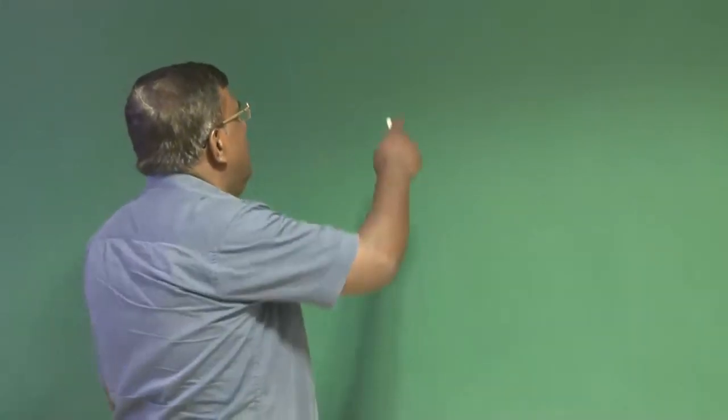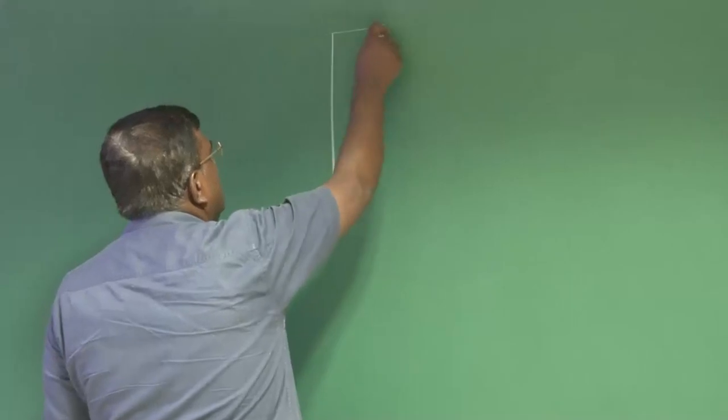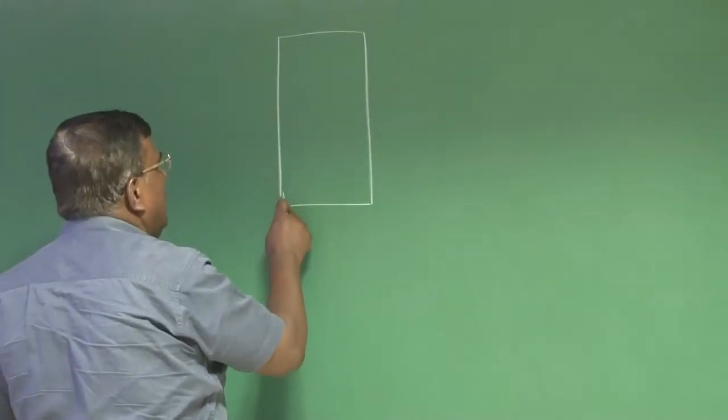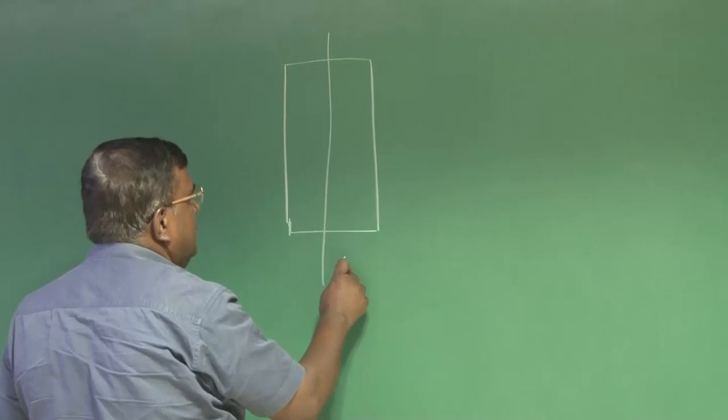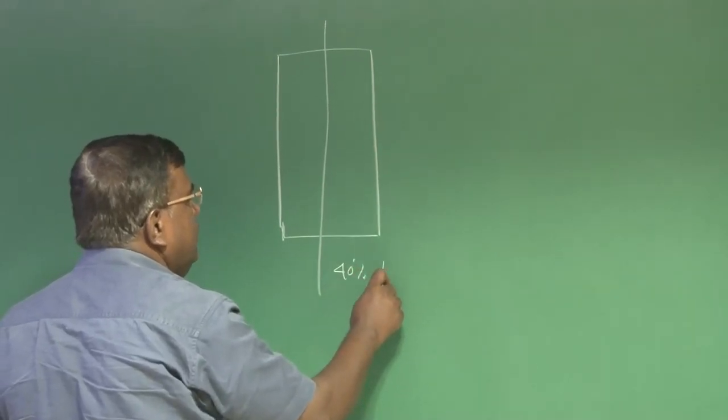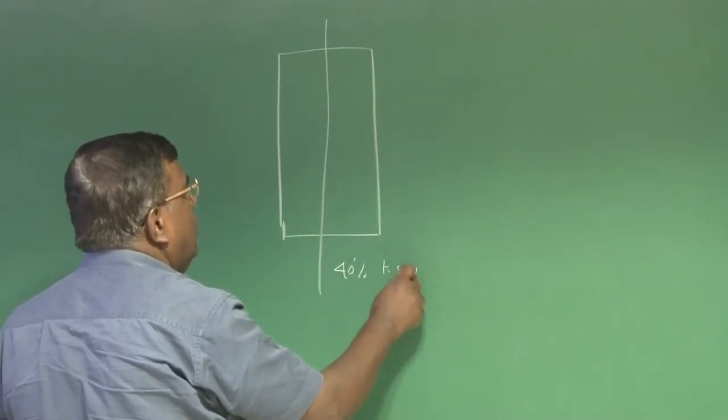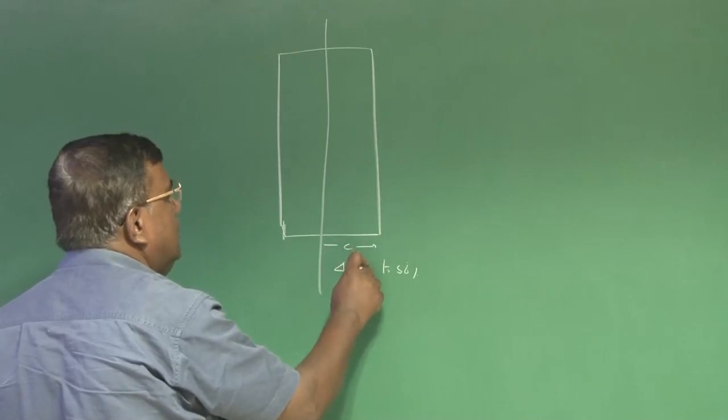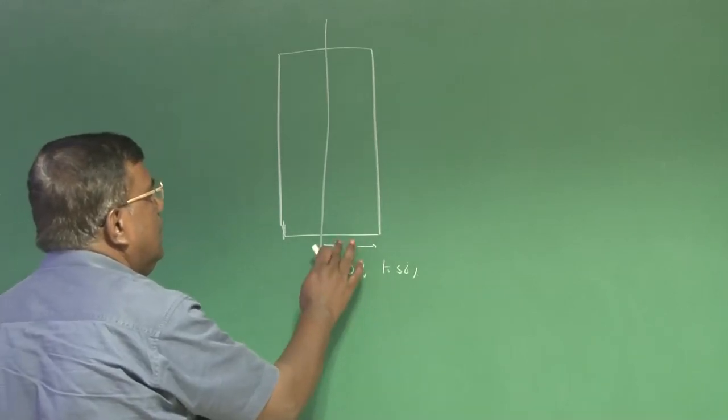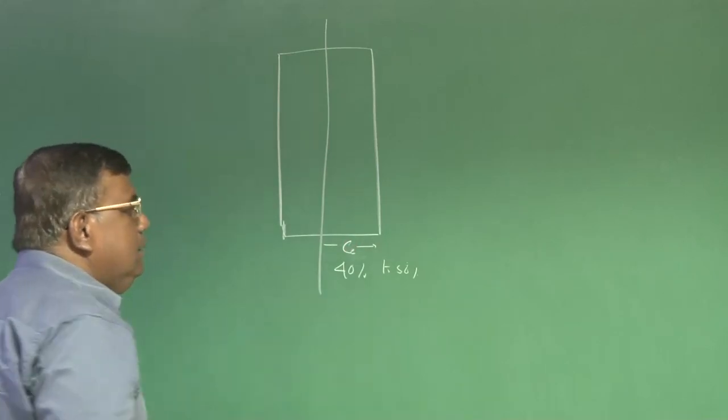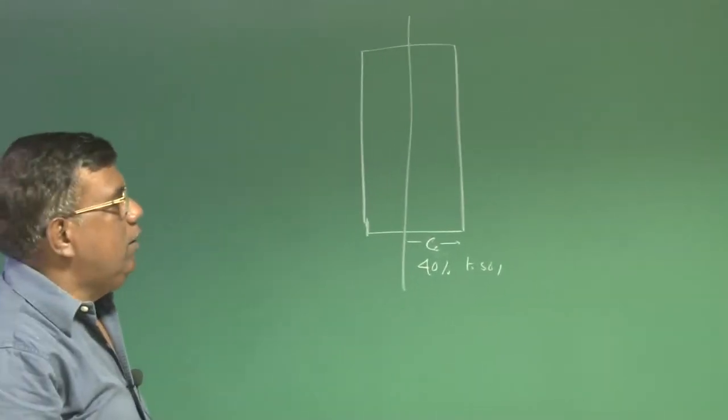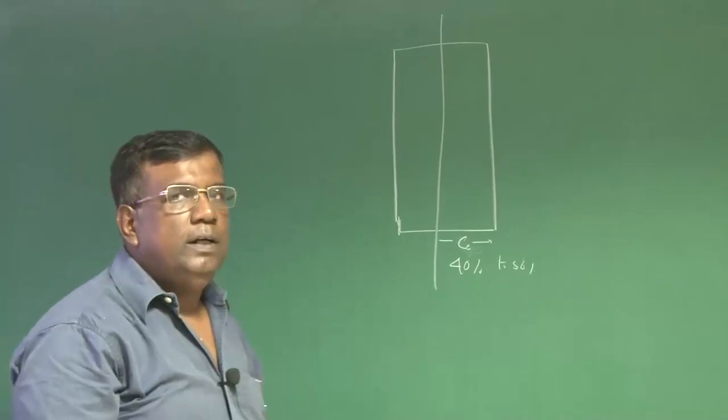Good morning friends, we are continuing our lecture on elevator design. At a conceptual stage, we have realized that if I have a horizontal tail like this, the elevator can roughly be 40 to 50 percent of the chord as the elevator chord. That is not a bad choice to start with.